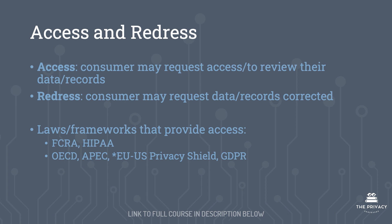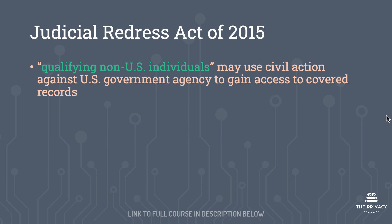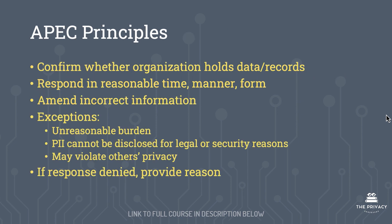A quick note on the Judicial Redress Act of 2015: you need to understand what a qualifying non-US individual is. This term refers to this particular statute, and a qualifying non-US individual is an individual who may use civil action against a US government agency to gain access to covered records.